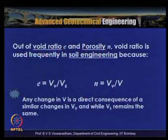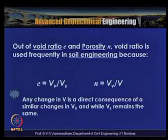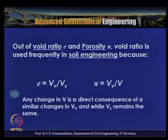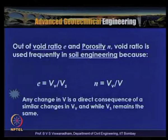In soil mechanics, both void ratio E and porosity N are used, but void ratio is used more frequently. The reason is that in the definition E = VV / VS, the denominator VS remains constant when soil undergoes compression or volume change, whereas in porosity n = VV / V, both numerator and denominator change. Hence void ratio E is preferred in soil engineering.